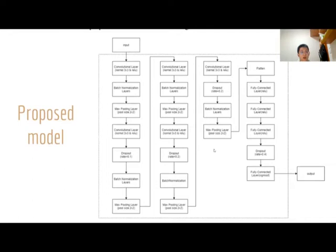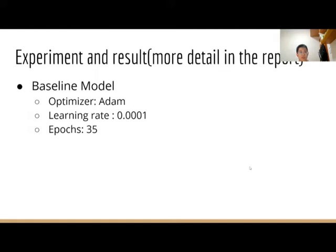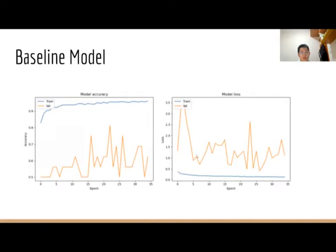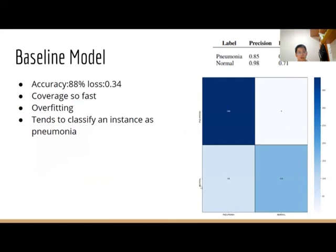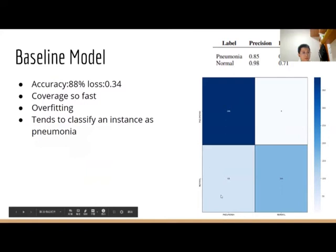Finally, we get our proposed model structure here. Before the experiments, we need to set our baseline model. The baseline model is our proposed model, and here is the configuration of the baseline model. We also do some visualization of the training process, which is shown here. As you can see, the model converges very fast. This baseline model achieves 88% accuracy and 0.34 loss. We also do some visualization of the test results. We can find out the model is suffering from overfitting problems, and it tends to classify instances as pneumonia.